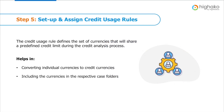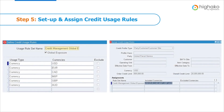The fifth step is to set up and assign credit usage rules. In Oracle Credit Management, the credit usage rule defines the set of currencies that will share a predefined credit limit during the credit analysis and enable the grouping of currencies for global credit checking. These rules ensure that all transactions for the specified currencies are converted to the credit currency and included in data point calculations in the case folder. Credit usage rules are mandatory — even if you perform credit reviews in only one currency or conduct your business in only one currency, you must still set up one credit usage rule. In this example, we have used currencies such as USD, EUR, CAD, MXP, GBP, and AUD.